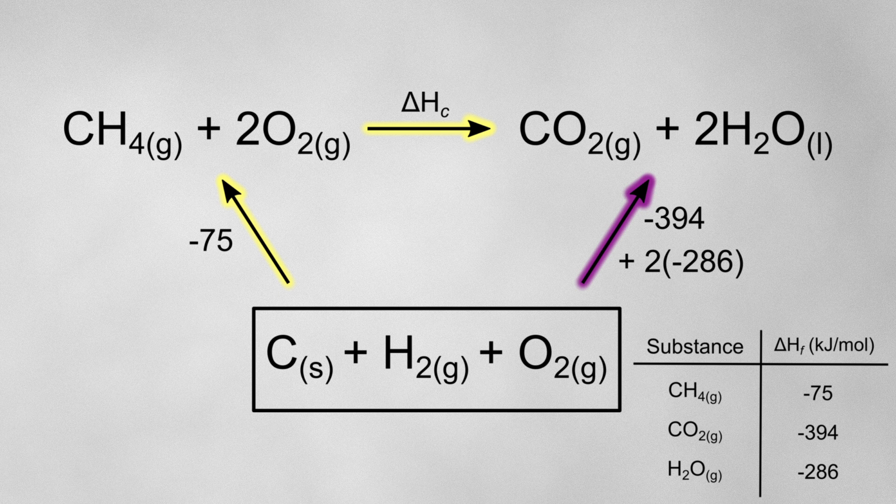This still obeys Hess's law because we're starting and ending at the same place, so the overall enthalpy change will be the same for both routes. And if you follow both of these routes, neither one goes against the direction of any arrow, so I can just use the enthalpies as they're written — no need to change any of the signs at all.